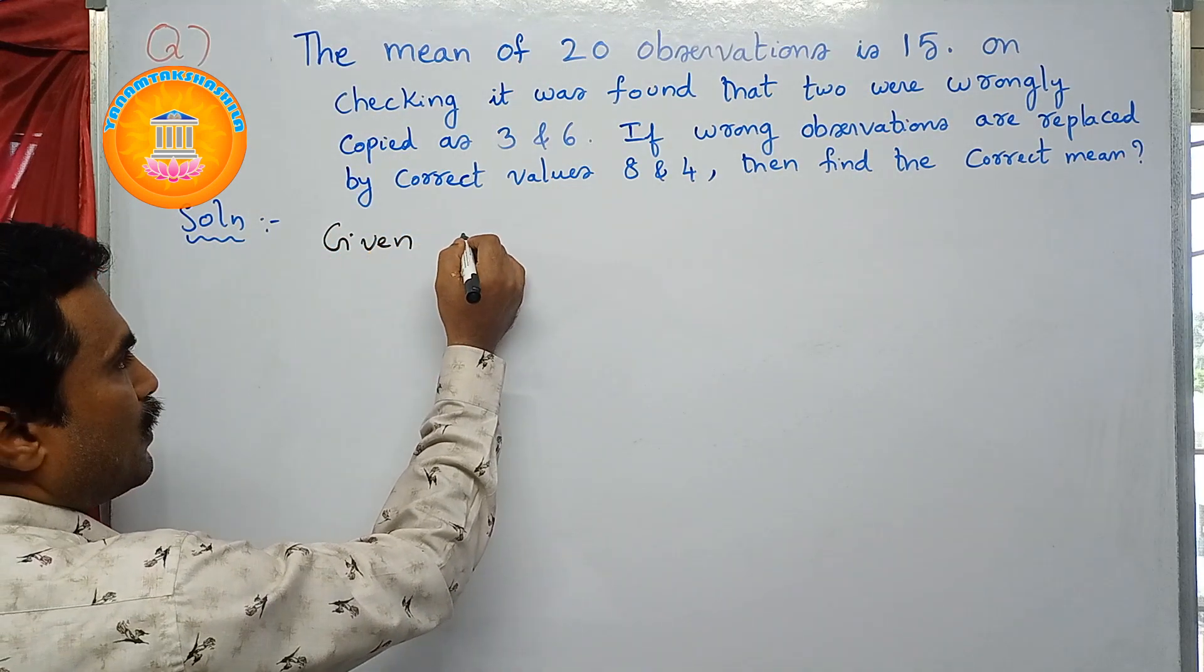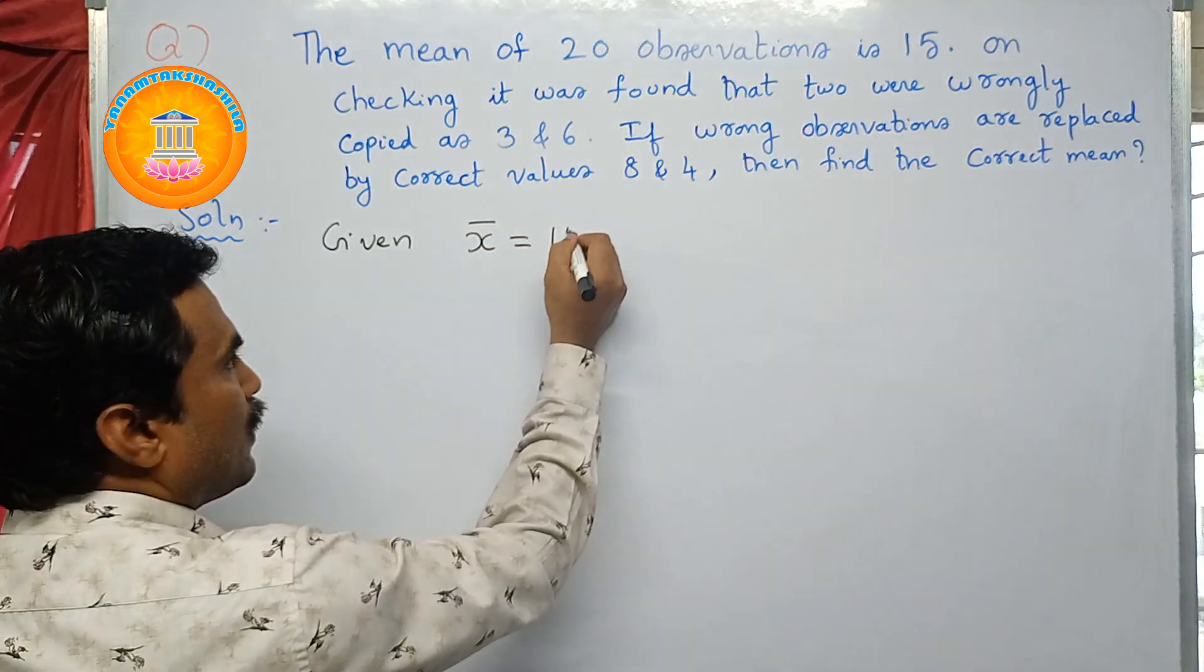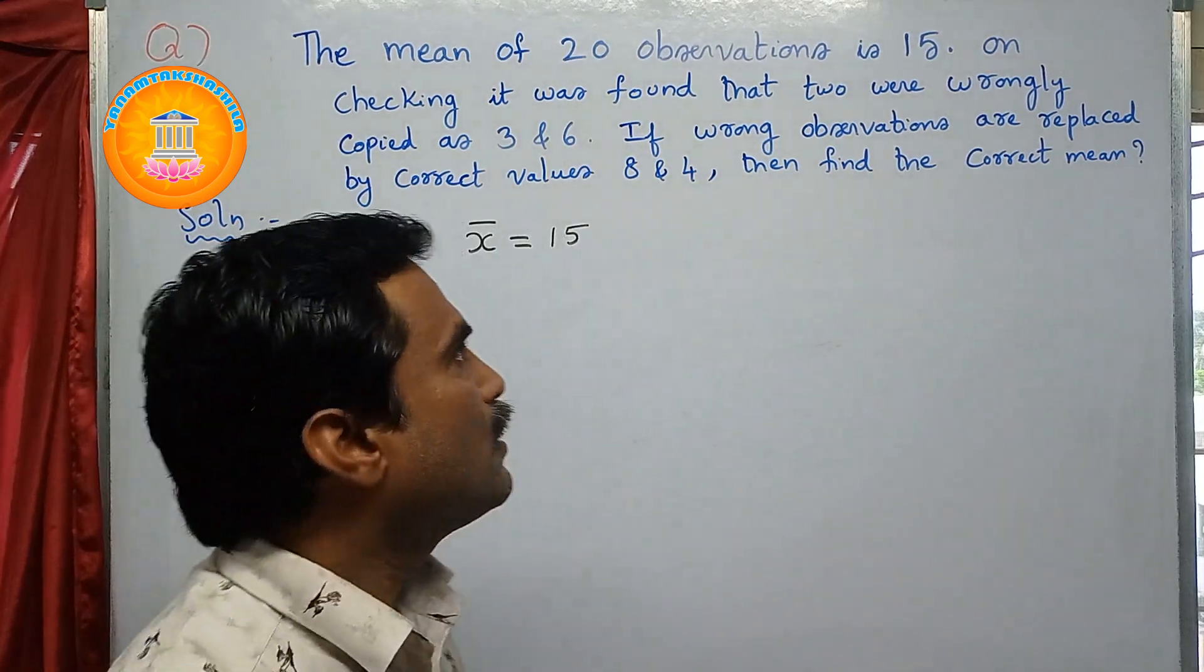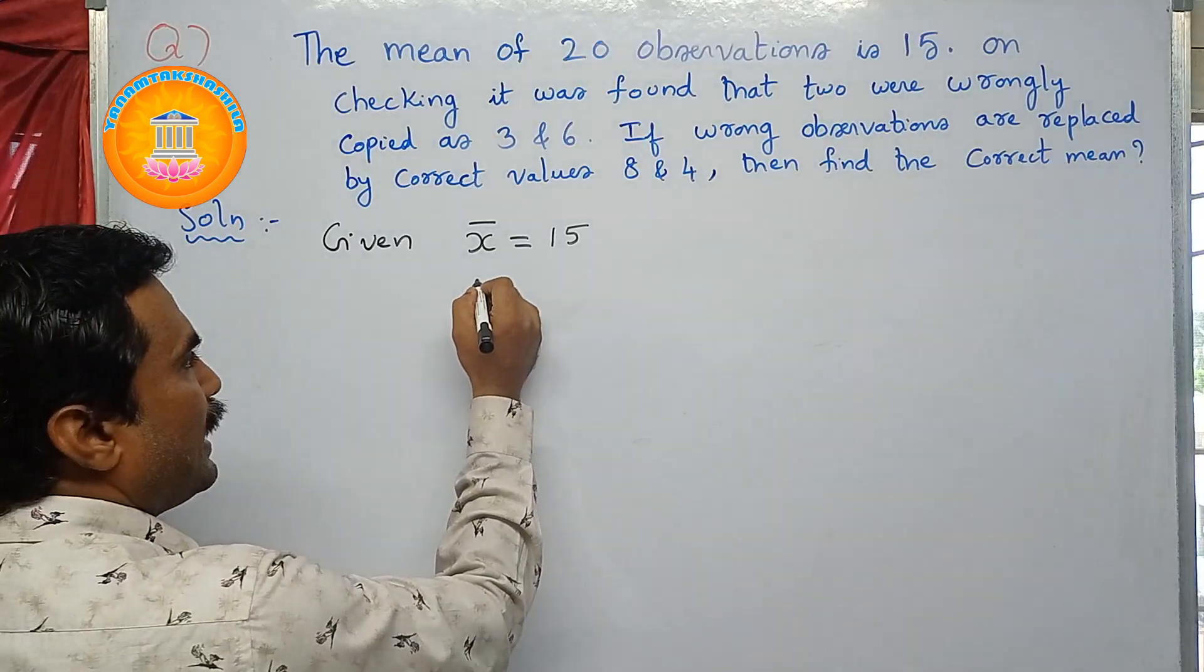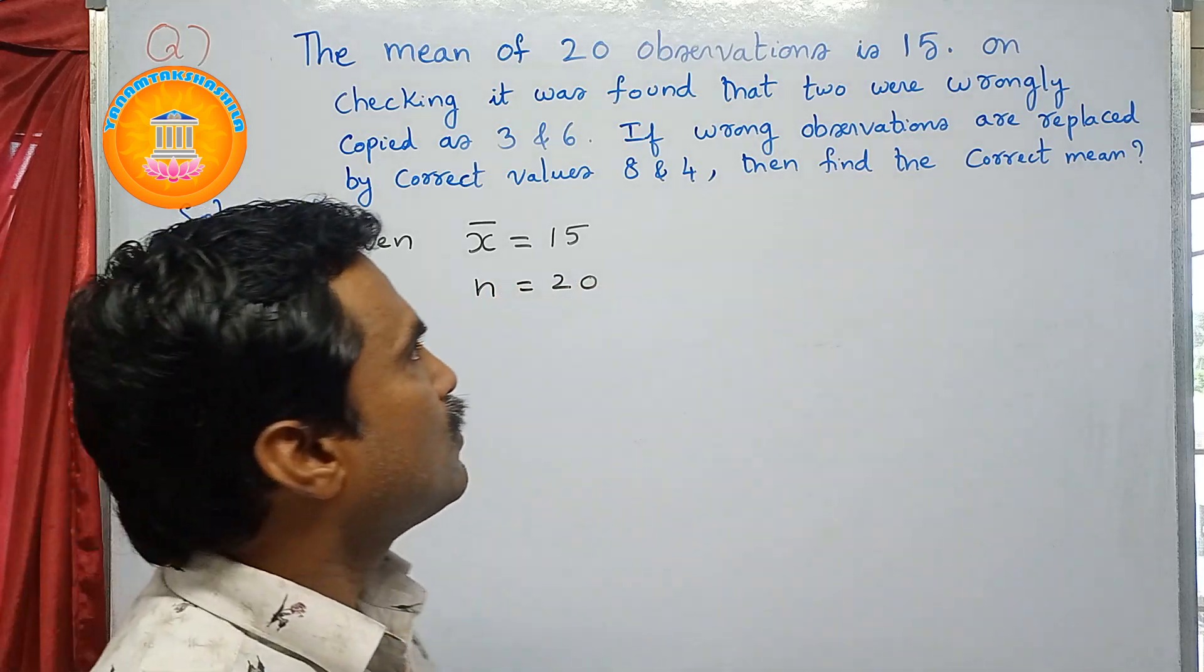That is mean, which is denoted by symbol x bar. So given x̄ = 15. Now here, the number of observations is also given. That is denoted by symbol n. So n = 20.